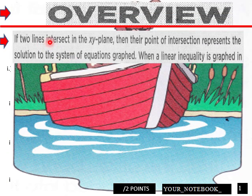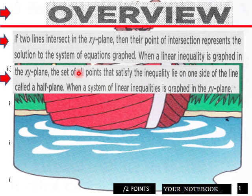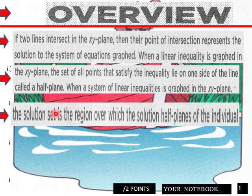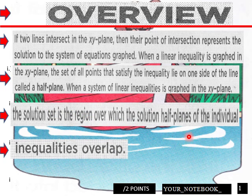Overview of this section. If two lines intersect in the xy-plane, then their point of intersection represents the solution to the system of equations. The set of all points that satisfy the inequality lie on one side of the line, called a half-plane. When a system of linear inequalities is graphed in the xy-plane, the solution set is the region over which the solution half-planes of the individual inequalities overlap.